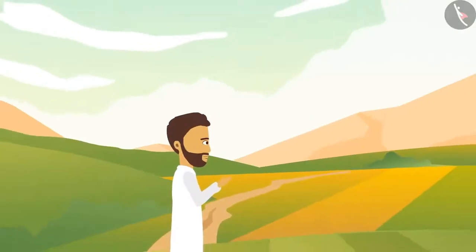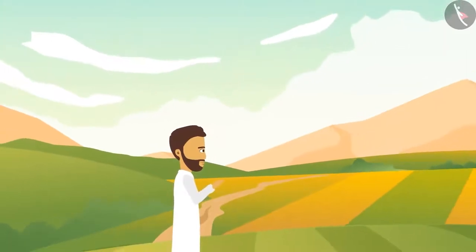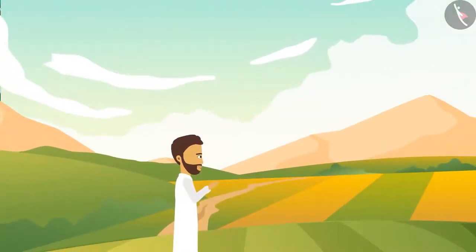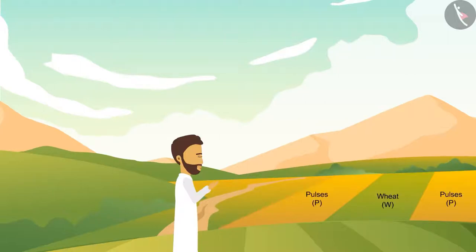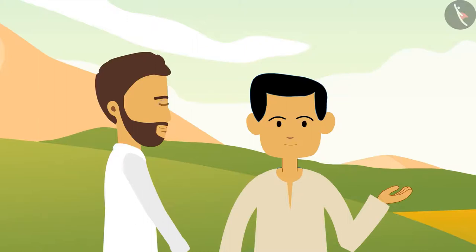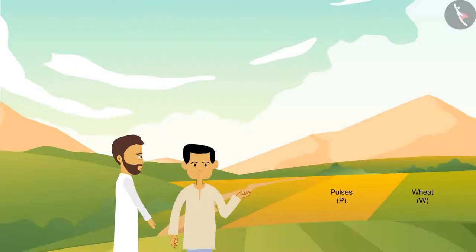Garim Bhai has bought the seeds and now is thinking how to sow them. Let's help him. This is the size of Garim Bhai's field. He is thinking to plant both the seeds in this way. At this point, his friend Vijay arrives and suggests him that changing the sides of the crop on a regular basis helps to maintain the fertility of the soil. Garim liked the suggestion of his friend and sowed the seeds in the similar way.